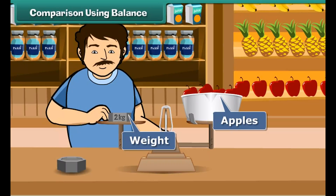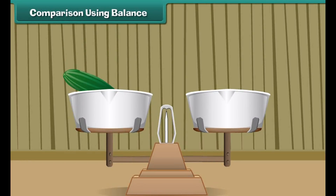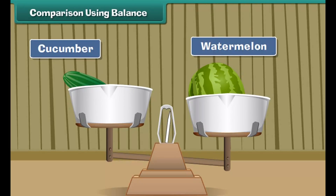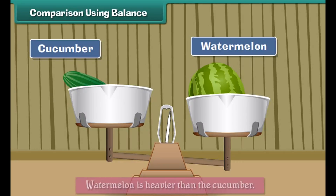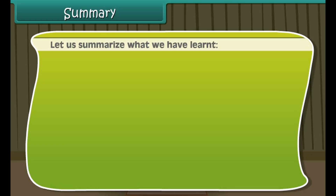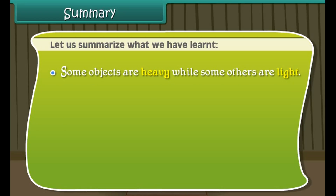Drag and drop the correct option to fill the sentences. Look at this picture — where have you seen this? Yes, in shops. It is called a balance. It is used to measure weights. An apple seller weighs apples by placing the apples on one side and the weights on the other side of the balance.